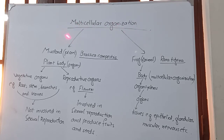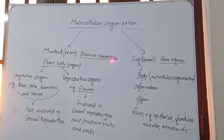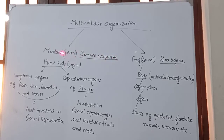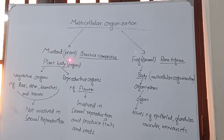Multicellular organization includes two examples: the mustard plant and the frog. First, discussing about the mustard plant — its scientific name is Brassica campestris. The plant body is made up of organs only; there are no organ systems. These organs are classified into two main groups: vegetative organs and reproductive organs.